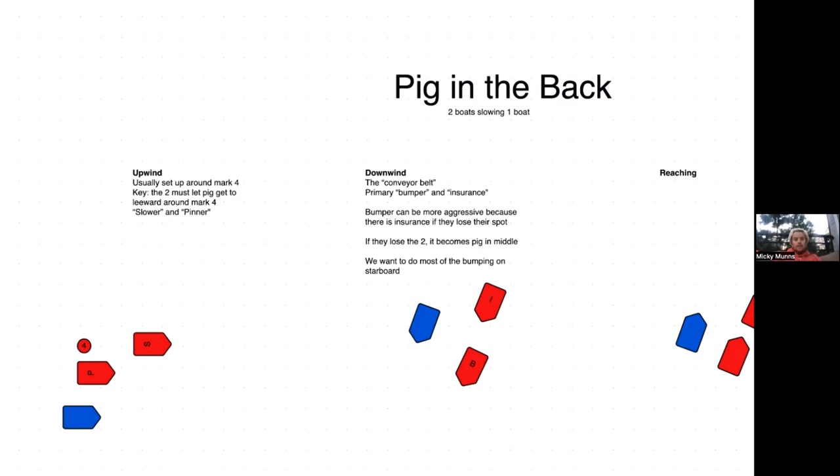What it's going to end up looking like is something like this. In light air this is incredibly effective. I mean, this boat can't tack out because they're pinned, they're getting crazy bad air dumped on them. Sometimes you get a little bit closer if you want to give them more bad air. It's an awesome thing to do. You set it around mark four and it works incredibly well.